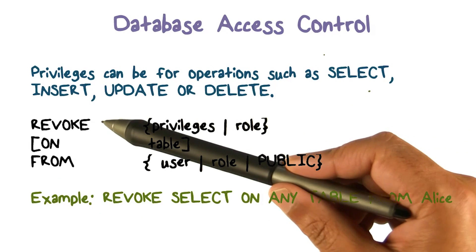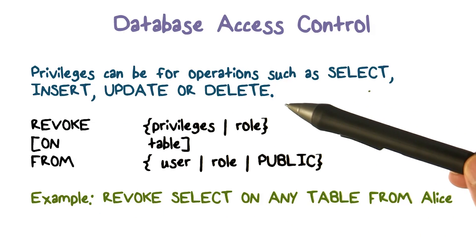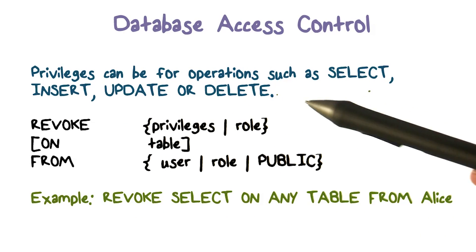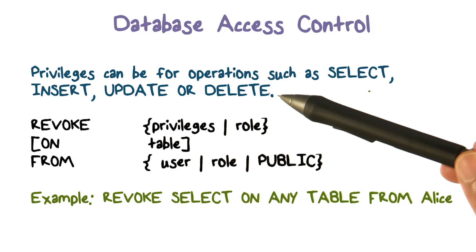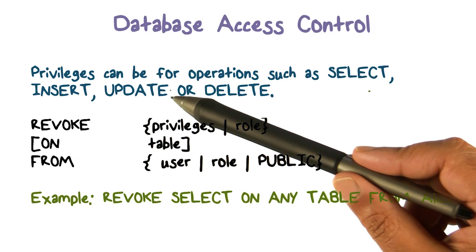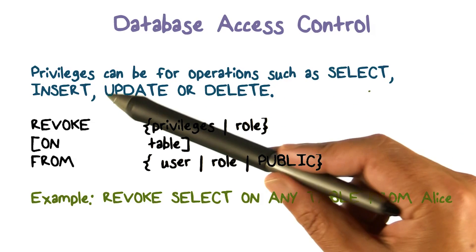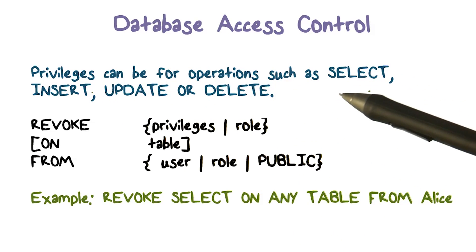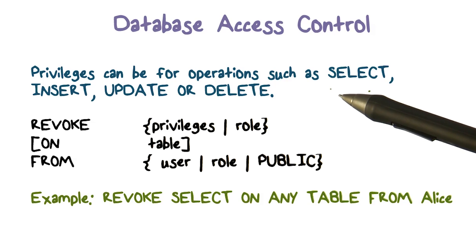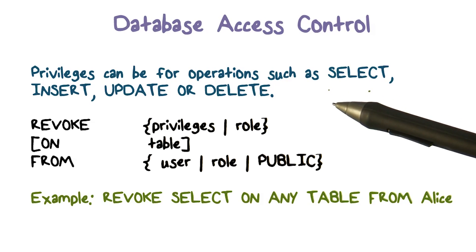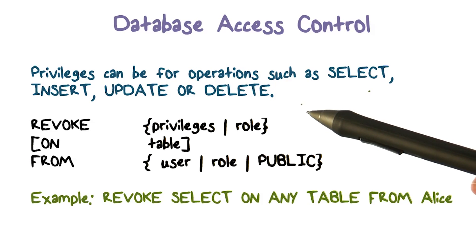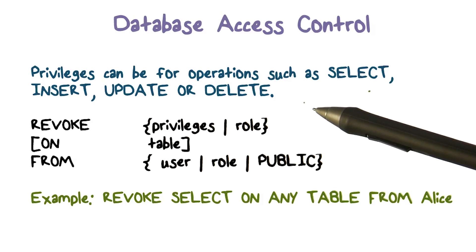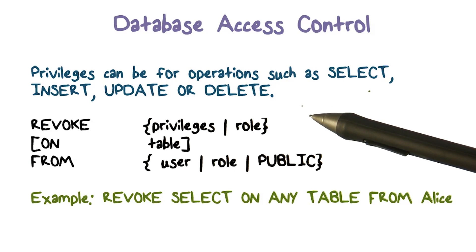Privilege can also be operations such as insert, update, delete tuples, and insert new tuples — all the different things we said we can do on databases. These are the operations you can perform, and access control says a certain user or role is allowed to perform that operation or not.